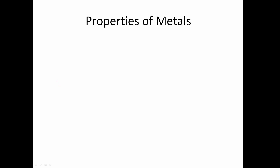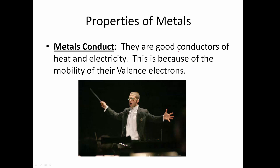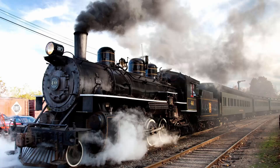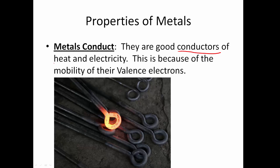Let's talk about some specific properties of metals. Number one: metals conduct. They are good conductors of heat and electricity. We're talking about being able to move something — like a train conductor conducts the train. They move heat and energy in terms of electricity.